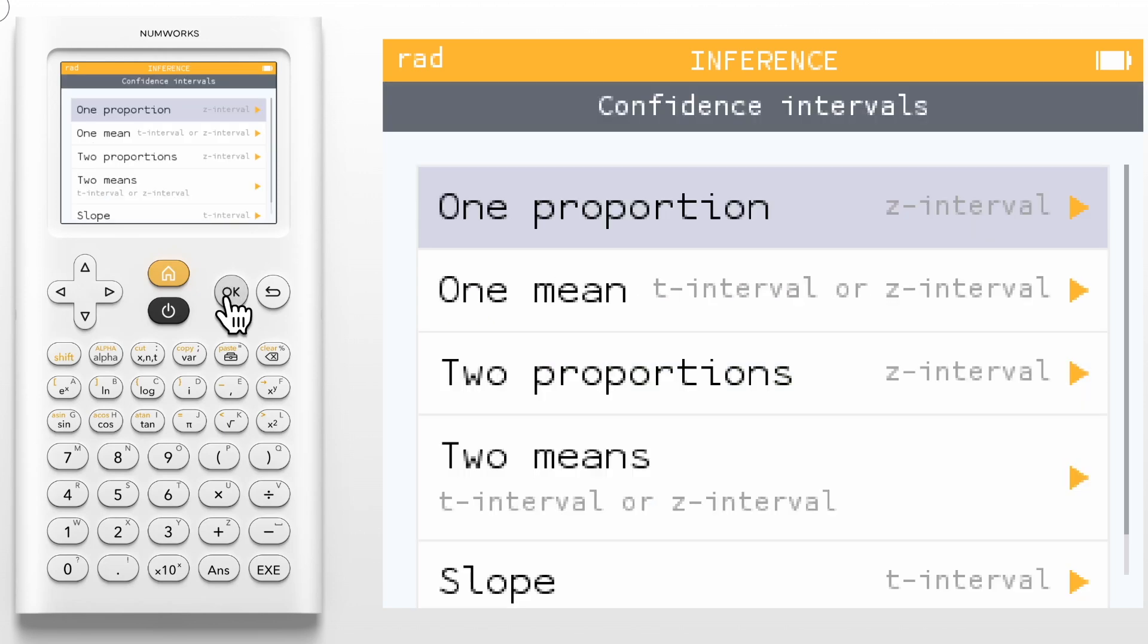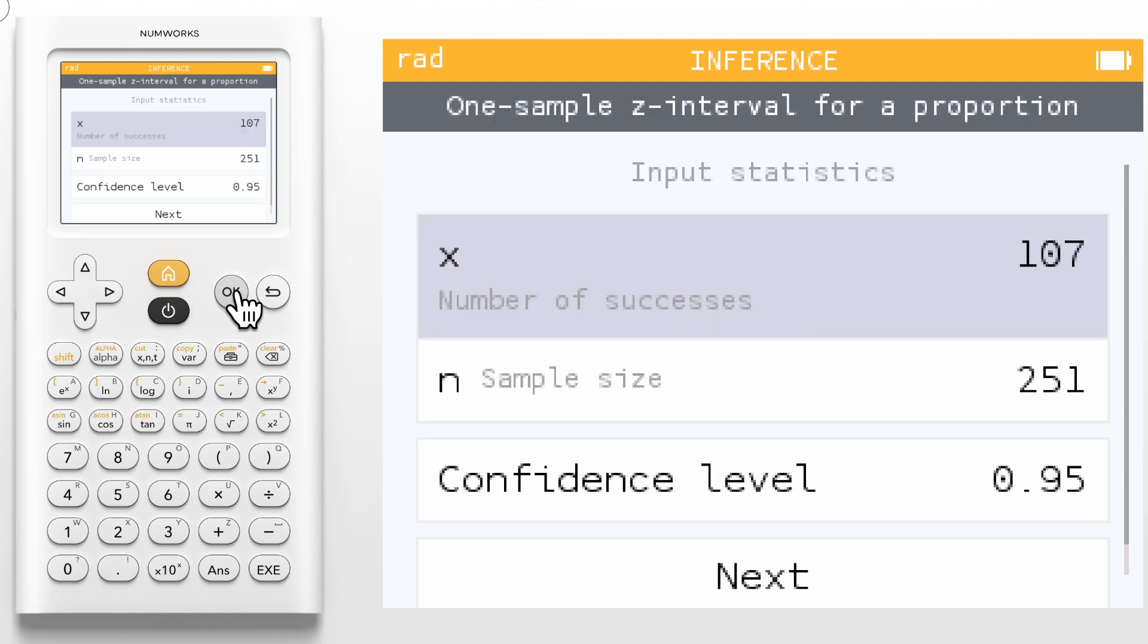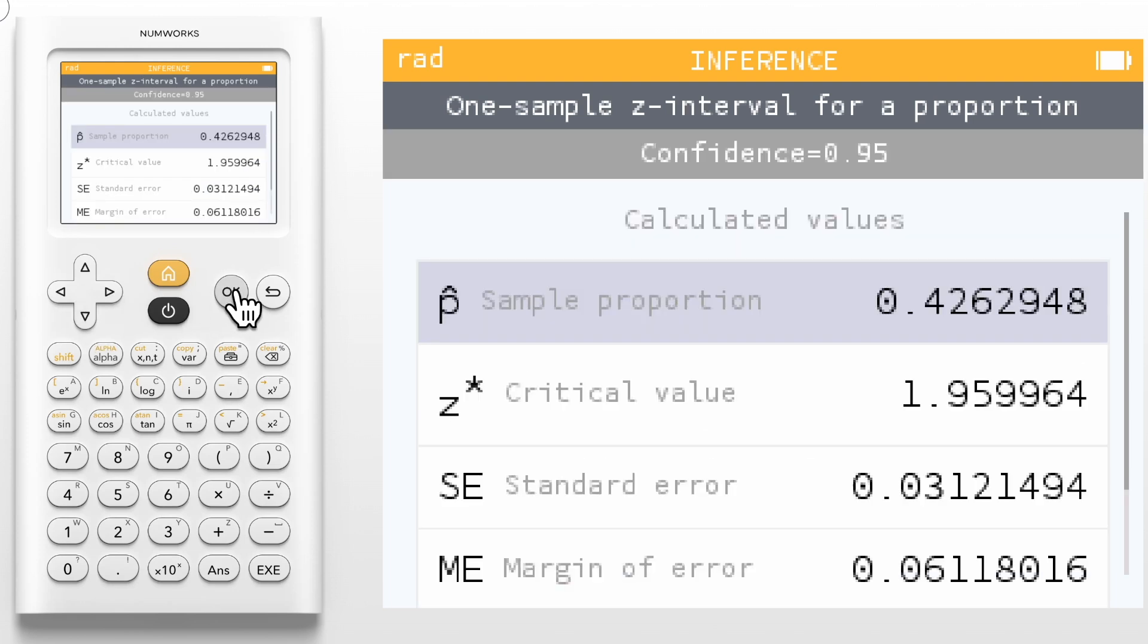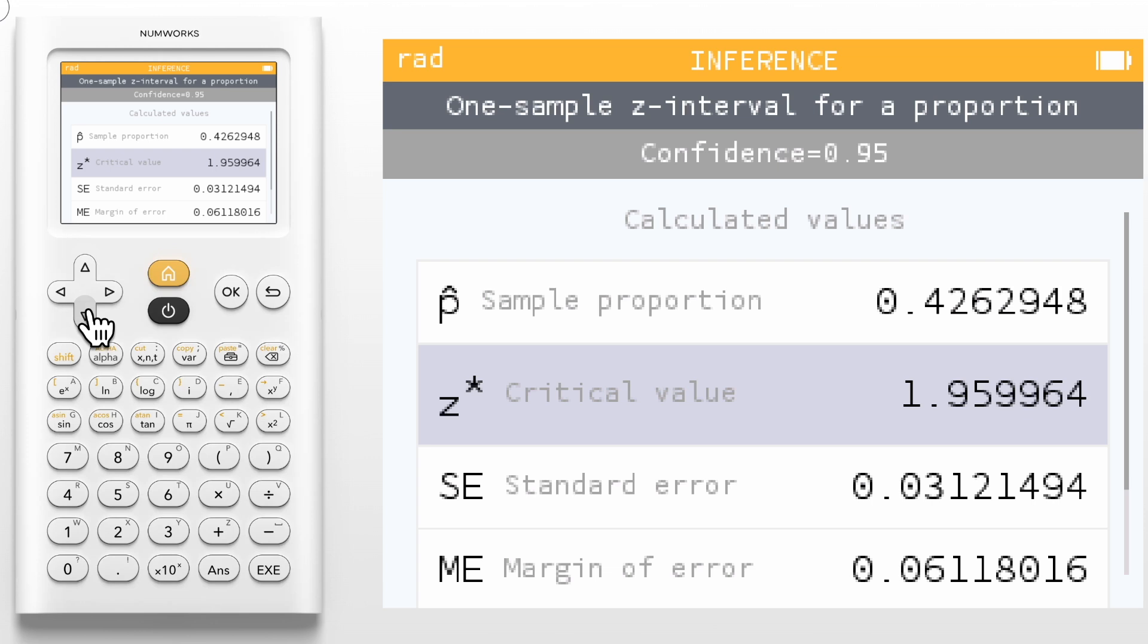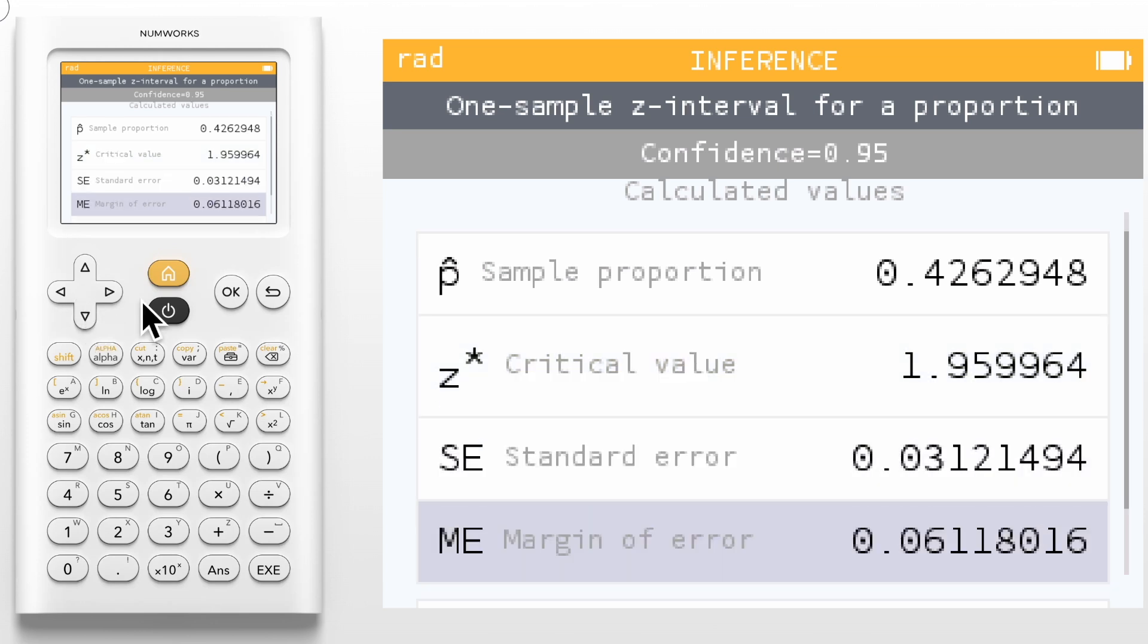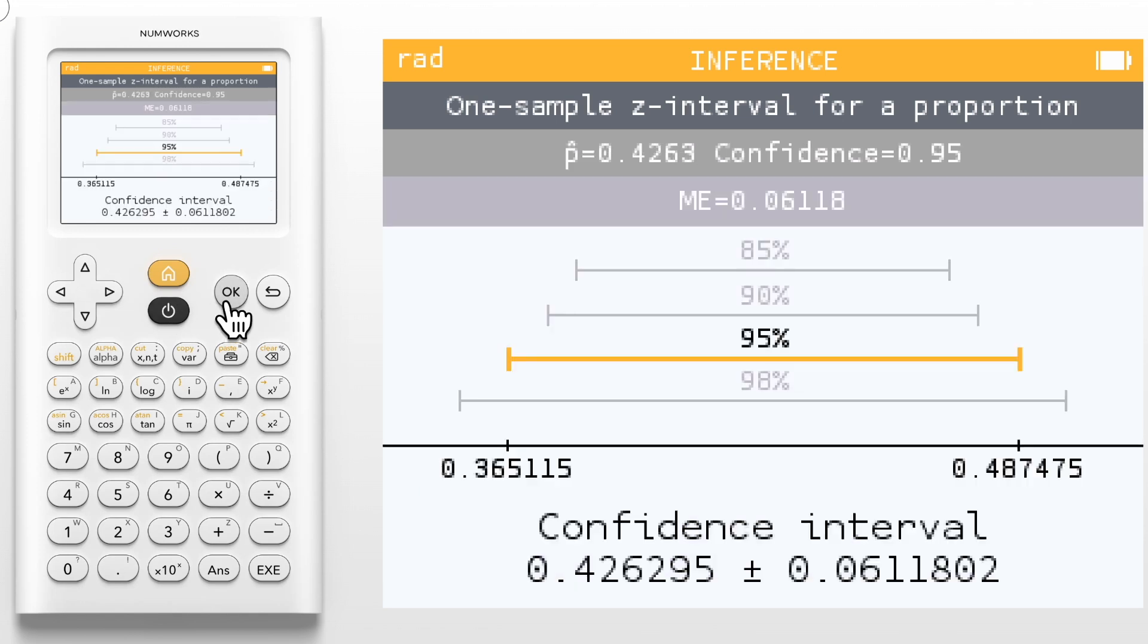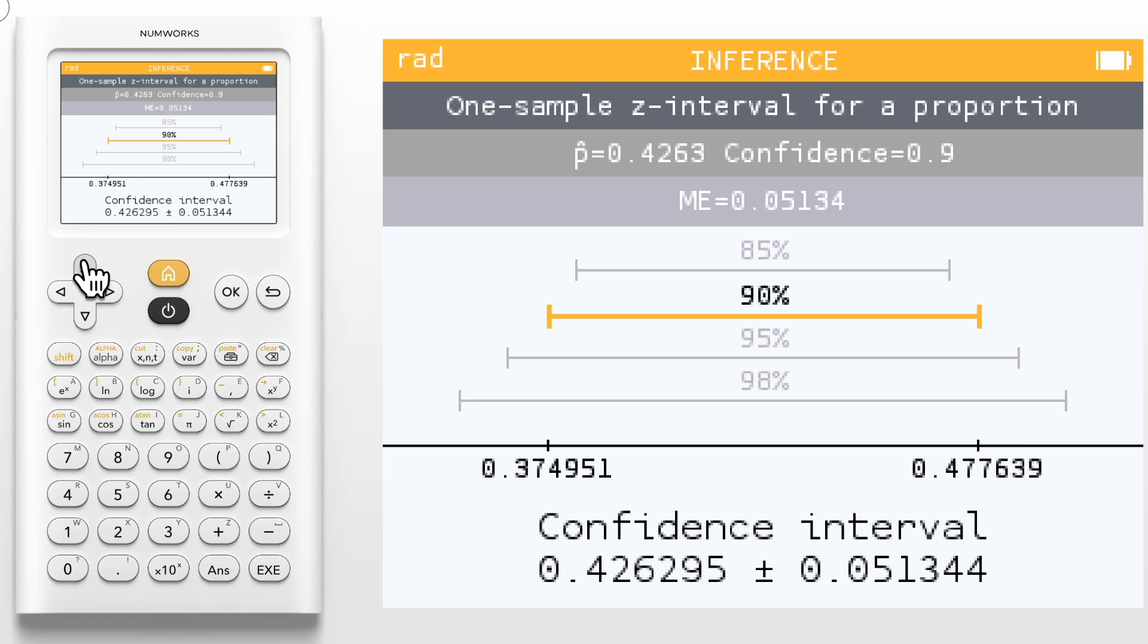Intervals will work in a similar fashion. For example, selecting a one proportion z interval will first enter our number of successes in sample size, along with our confidence level. The next screen shows our sample proportion, critical value, standard error, and margin of error. The final screen shows your confidence interval as both a point estimate and margin of error at the bottom, as well as the endpoints of the interval along the line. You can even use the up and down arrows to see how the different confidence level affects the interval.